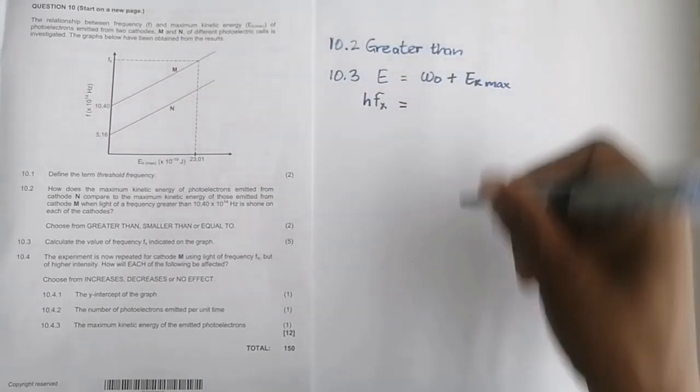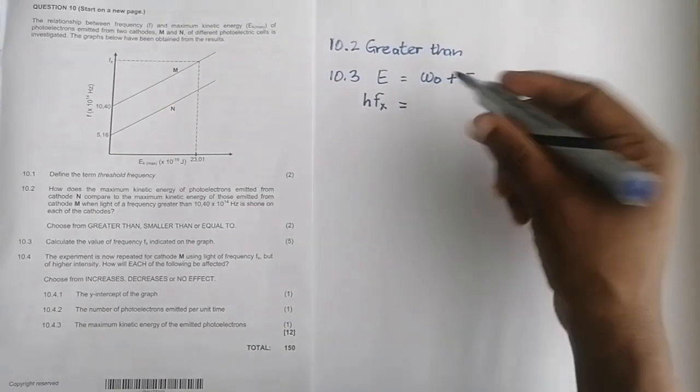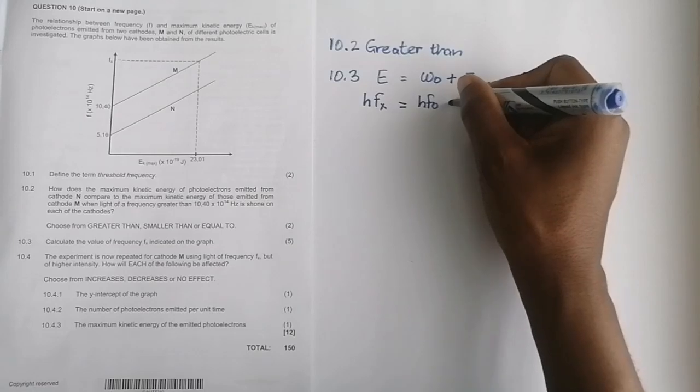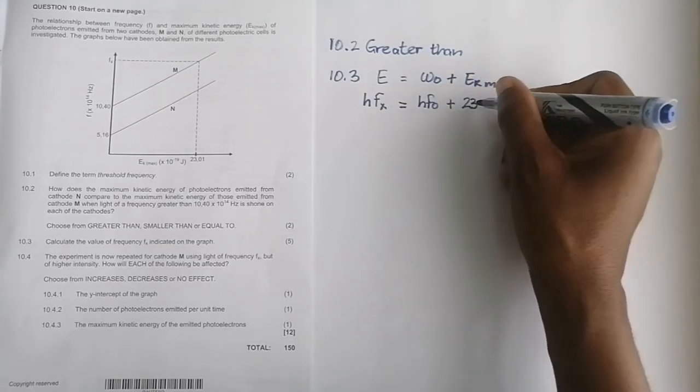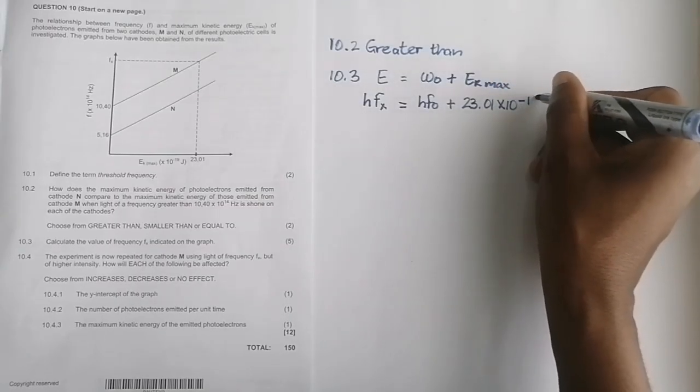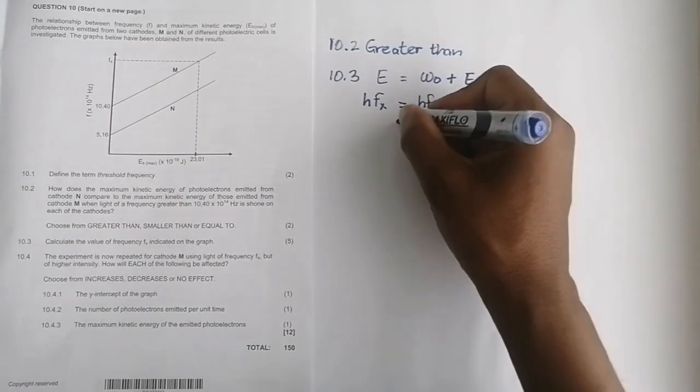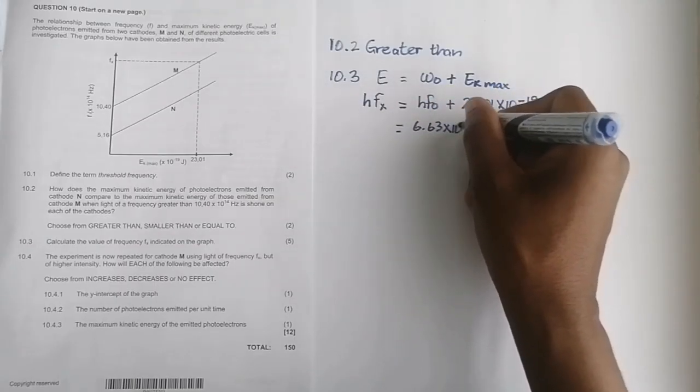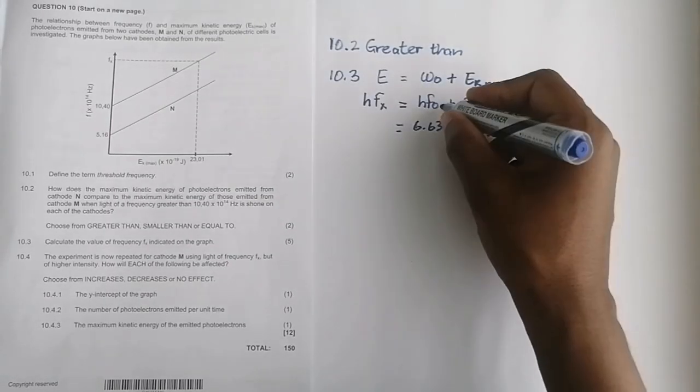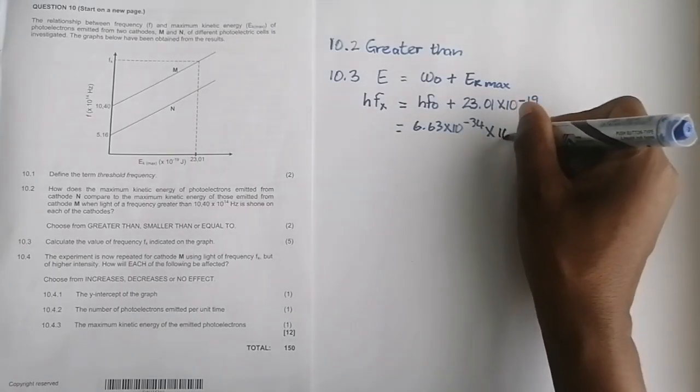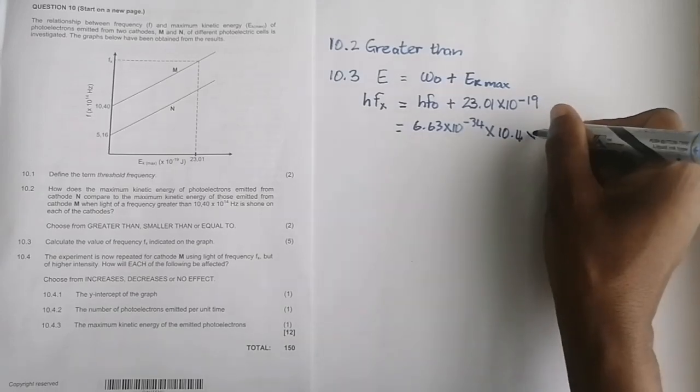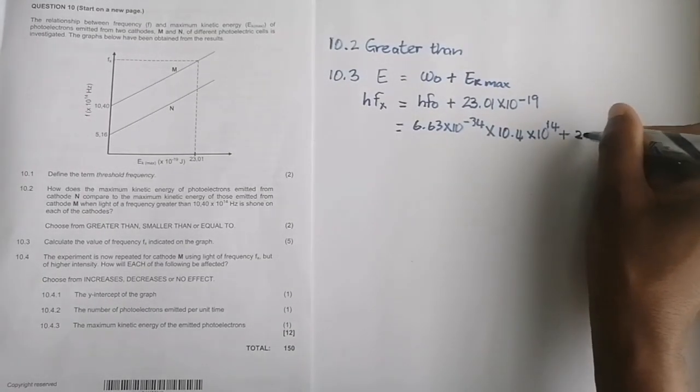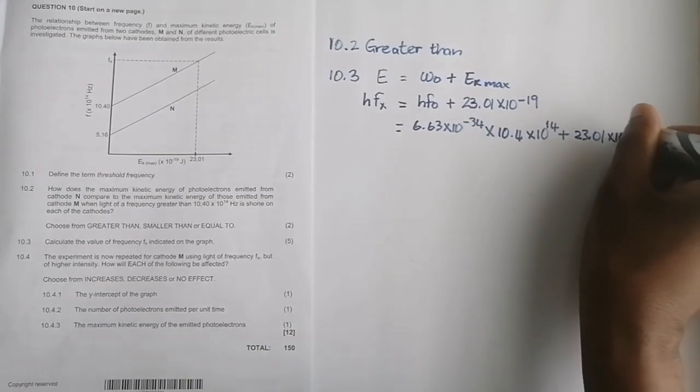Omega zero in this case would be hf₀, because I've got my threshold frequency for M there, plus the maximum kinetic energy, 23.01 × 10^-19. Let's try and get that quickly. Remember, Planck's constant is 6.63 × 10^-34, multiplied by our threshold frequency 10.40 × 10^14, plus 23.01 × 10^-19.